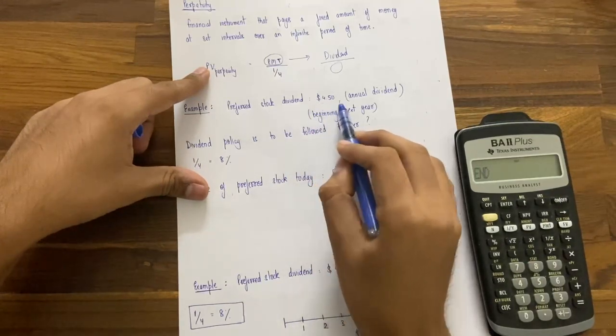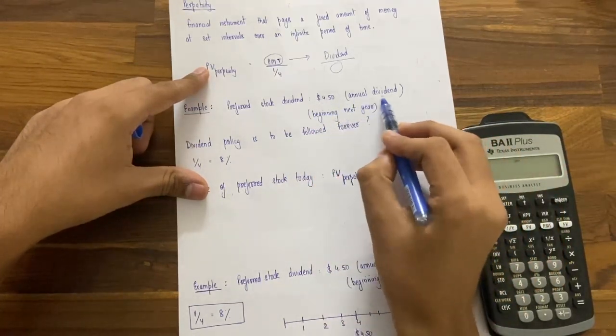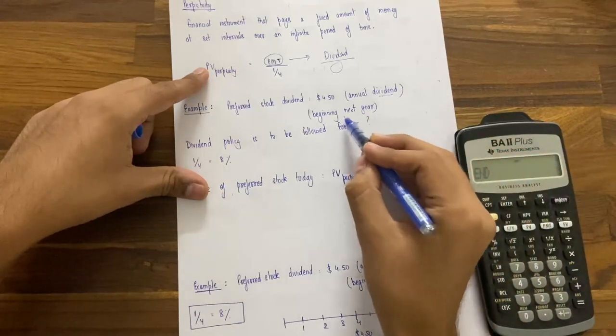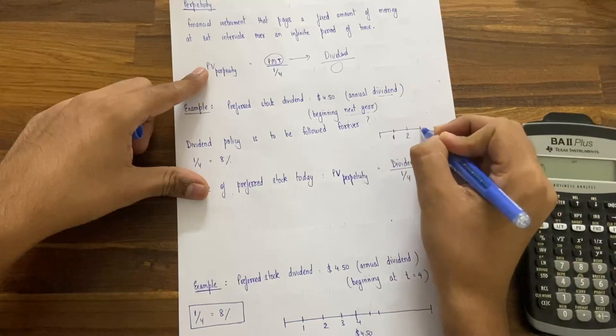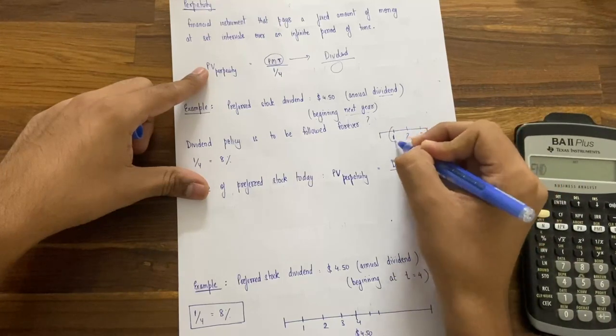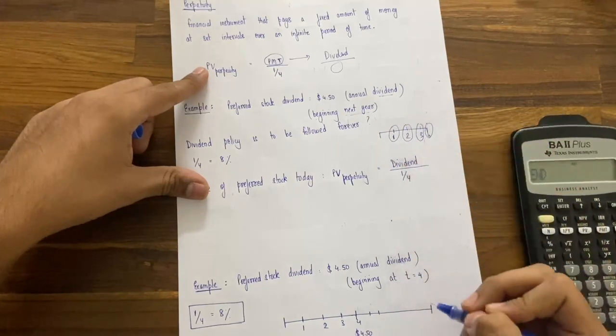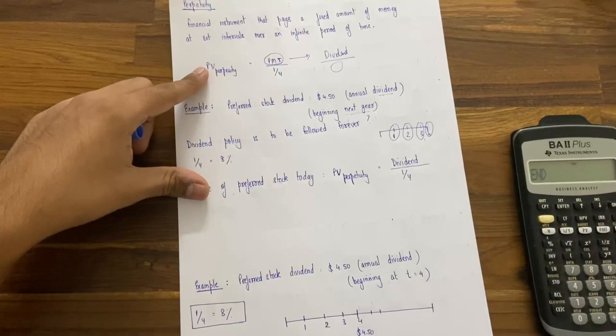The preferred stock we have is $4.5 annual dividend at the end of each year. So when will we get it? From next year. So year 1, year 2, year 3, 4th year, here, here, here. We are getting the dividend.